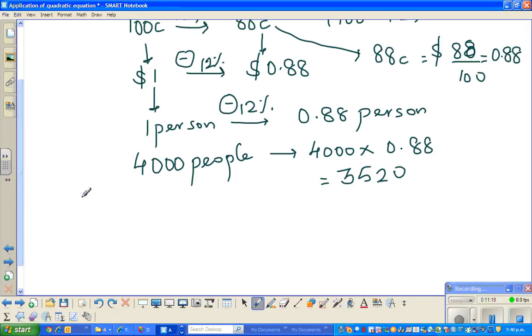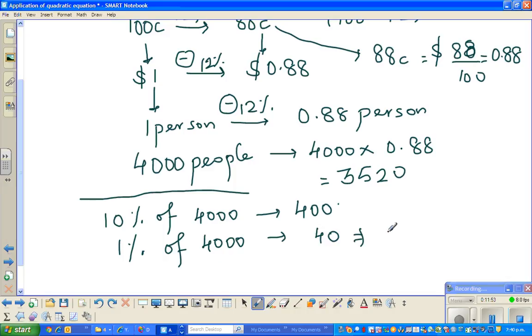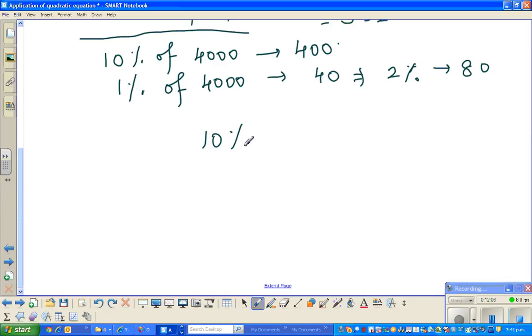Now let us check our answer in a different way. We know 10% of 4000 would be 400 people, one-tenth of this. 1% of 4000 would be one-hundredth, so if you divide by 100, that is 40 people. This implies if 1% is 40, 2% would be 80. Let me rewrite: 10% is 400 people, and 2% is 80 people. So 12% would be - you have to add this - that is 480.